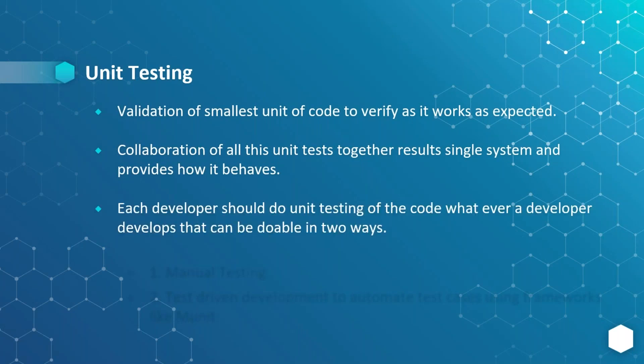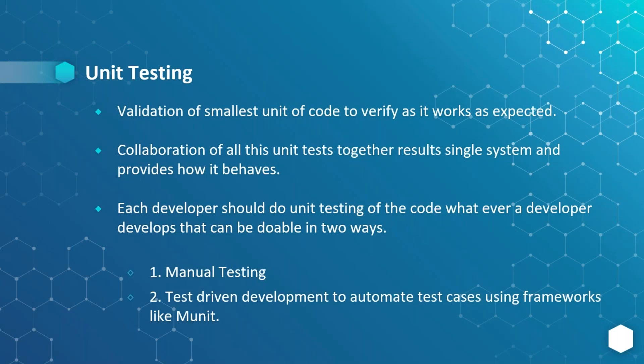Each developer in real time should do unit testing. Unit testing is one of the responsibilities of each developer. Whatever code a developer develops, that can be unit tested in two ways. So far we know how we can do manual testing, but each and every technology supports test-driven development by writing automation scripts using some existing frameworks like MUnit.